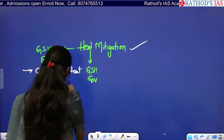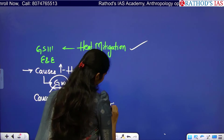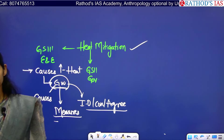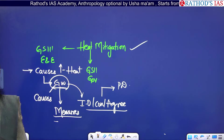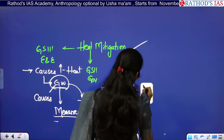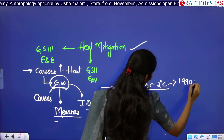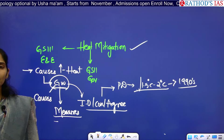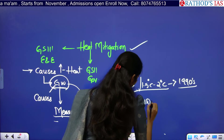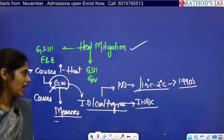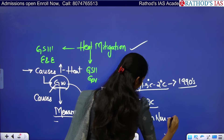You should also know about international organizations and conventions for controlling global warming. We have the Paris Climate Deal, which says we must reduce global temperature by 1.5°C to 2°C compared to pre-industrial levels, that is 1990s temperature. We also have INDCs — Nationally Determined Contributions — and India has a target of carbon neutrality or net zero by 2070.